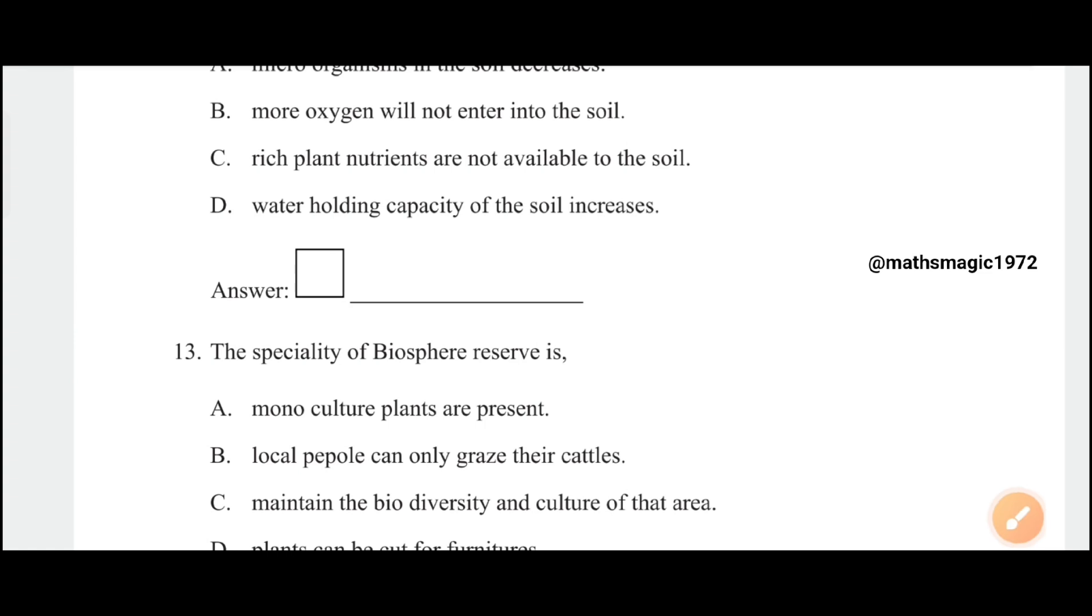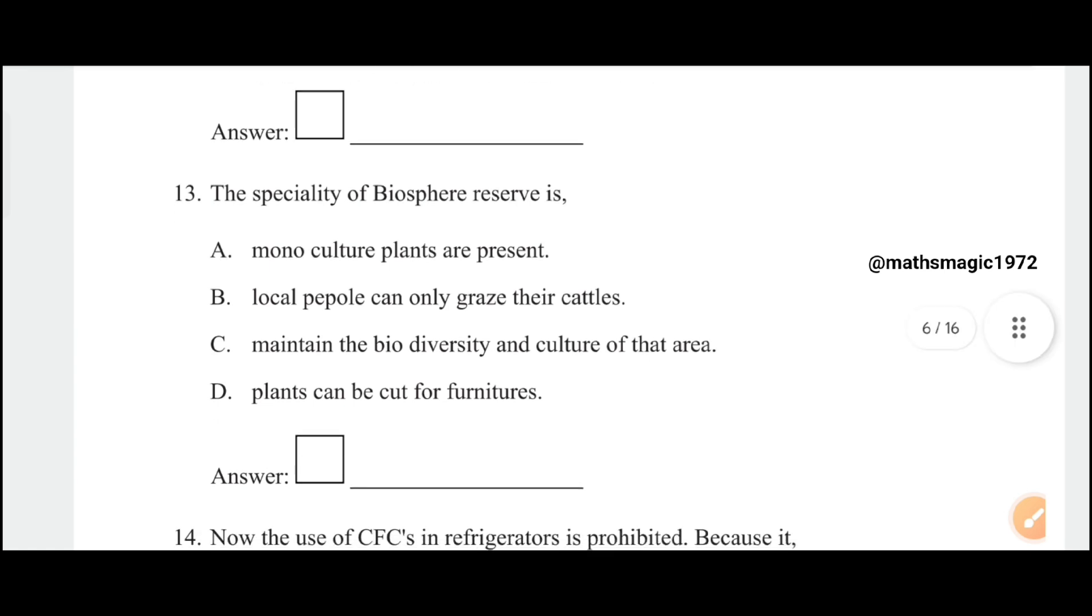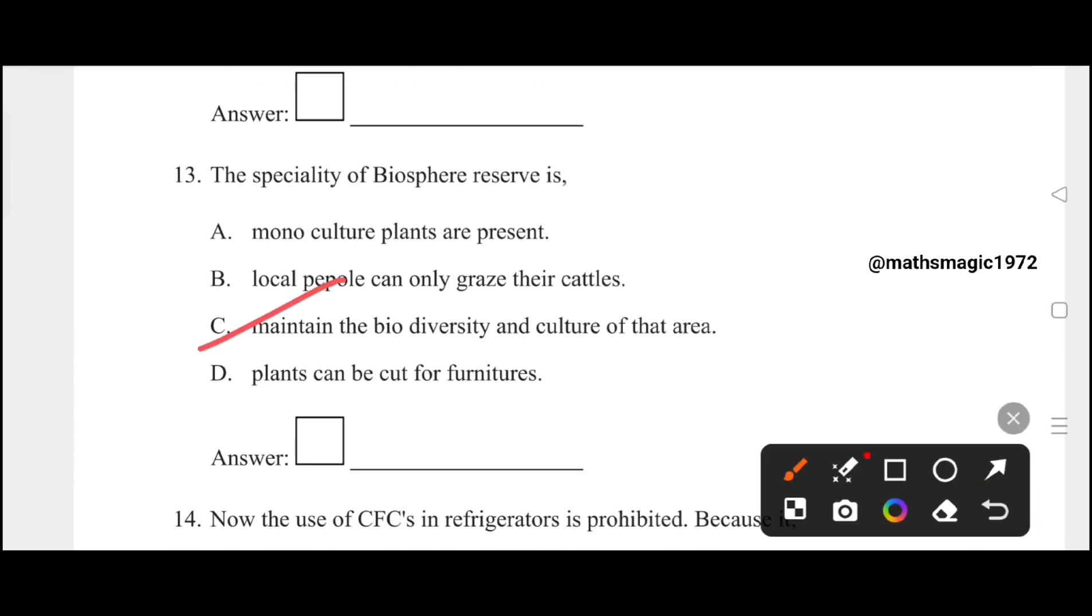The specialty of biosphere reservoir is: A) monoculture plants are present, B) local people can only graze their cattle, C) maintain the biodiversity and culture of that area, D) plants can be cut off for furniture. The correct answer is option C, maintain the biodiversity and culture of that area.